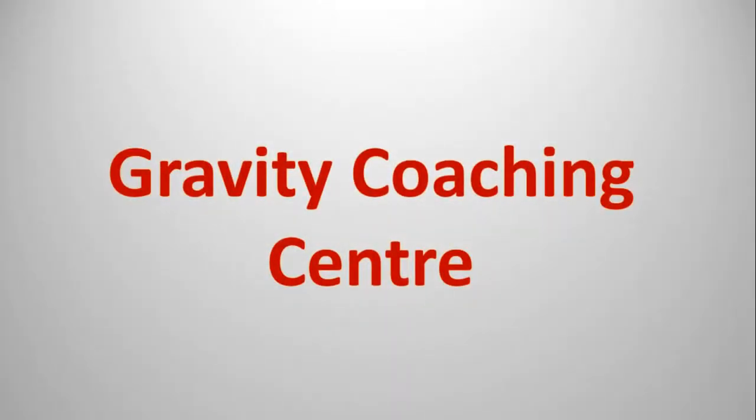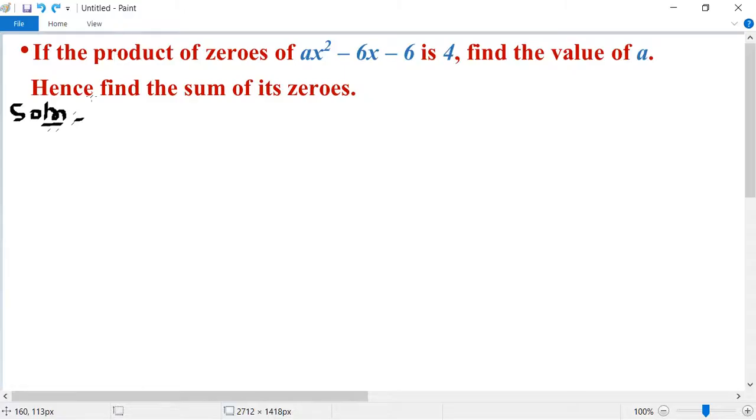Welcome to my channel. If the product of zeros of ax² - 6x - 6 is 4, find the value of a, and also find the sum of its zeros. So the first thing we will do here...